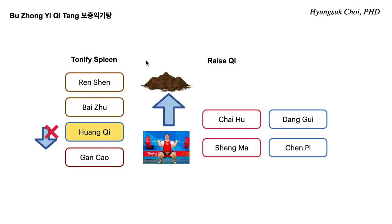So Bujong Ichi Tang was originally invented to treat fever. Bujong Ichi Tang tonifies qi with Si Junji Tang with Huang Qi, but also has Cai Hu and Shang Ma. What does Cai Hu do? Cai Hu treats fever — specifically Shaoyang fever, not completely Tai Yang, not completely Yang Ming, meaning between exterior and interior. Cai Hu treats alternating fever and chills that seem to go away and come back, clearing those lingering heat conditions. It is different from Shi Gao or Huang Lian and Huang Qin.